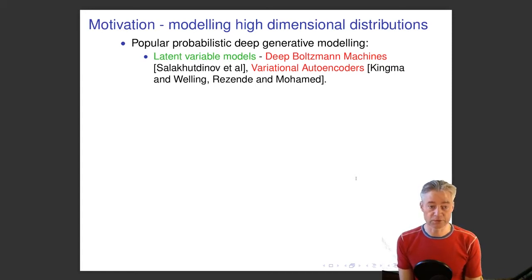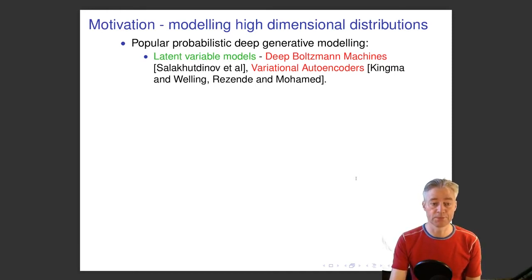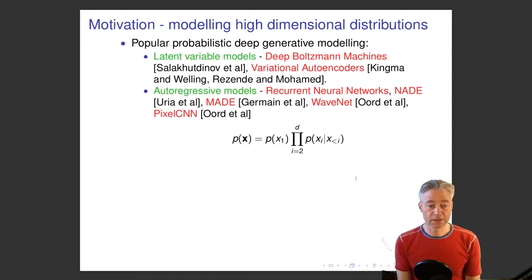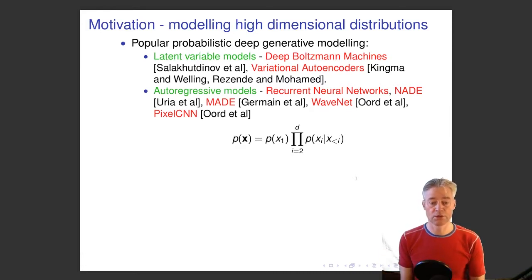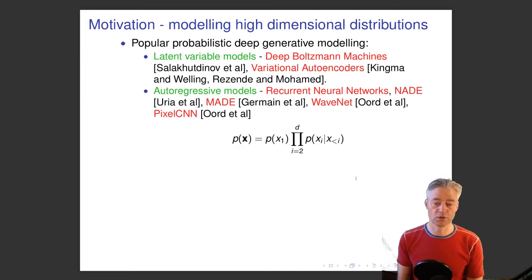One of our favorite types of models is latent variable models, including variational autoencoders and deep Boltzmann machines. Another approach that avoids latent variables and variational inference is autoregressive models, including recurrent neural networks. The idea is that you take a multi-dimensional distribution x and choose some ordering, then write the probability distribution as a product of d-minus-one conditional distributions, where the 'less than i' notation means all preceding variables before variable i.